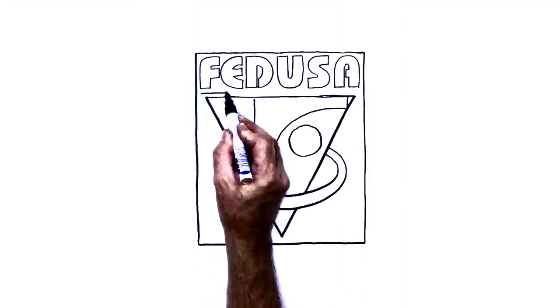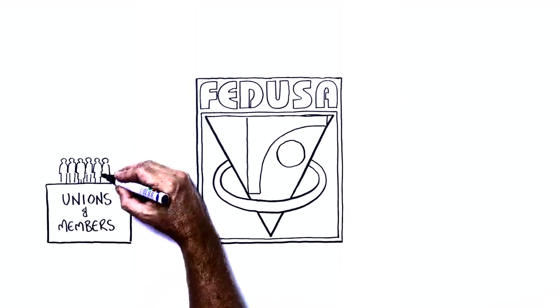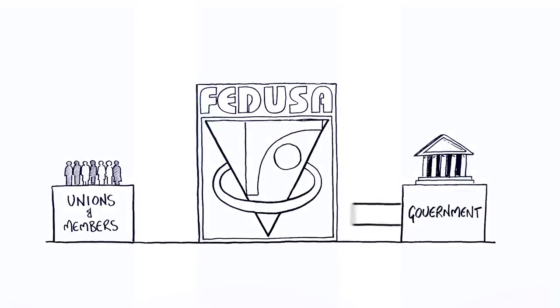Together they form an organization such as the Federation of Unions of South Africa. FEDUSA represents its unions and its members at the national level, where it lobbies government and parliament to recognize the needs of workers when making decisions.